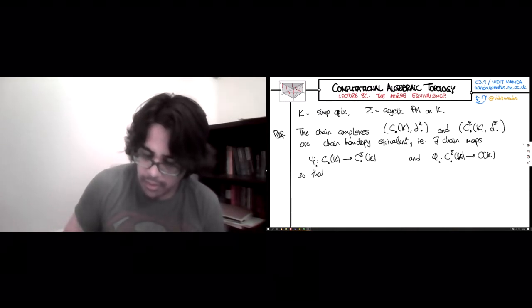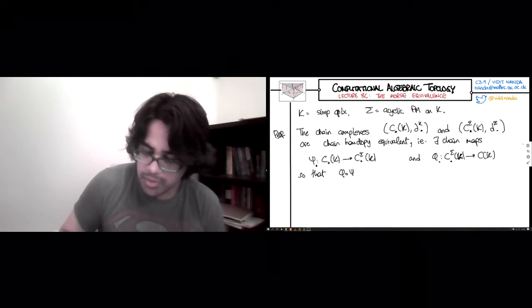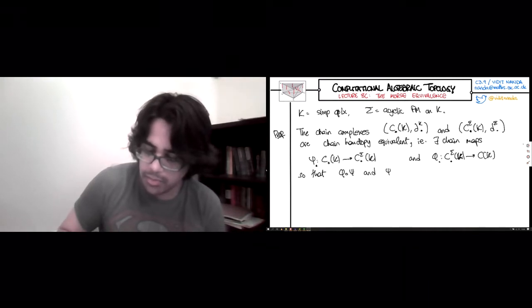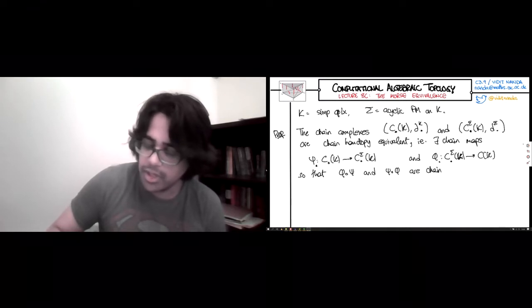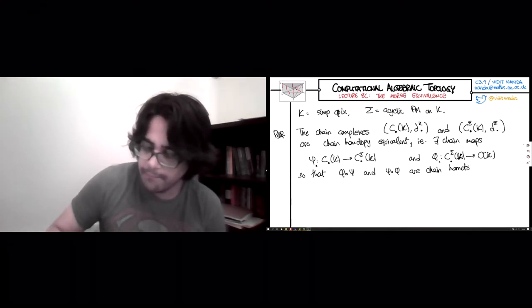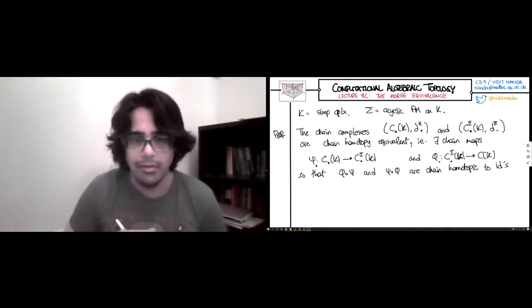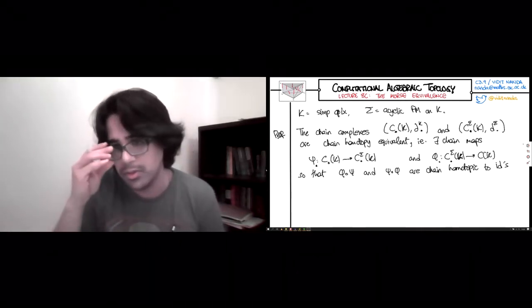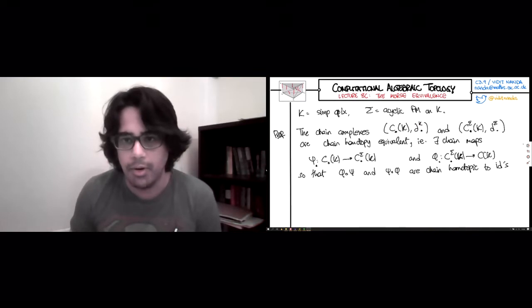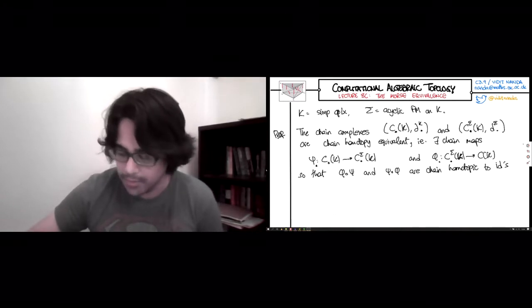So that phi composed with psi and psi composed with phi are chain homotopic to the identity maps. On one way, the composition is going to be chain homotopic to the identity map on the Morse complex, and the other way, it's going to be the identity map on the original simplicial chain complex.